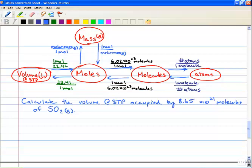Hey everyone, what's happening? Well, we're just going to do a couple of examples here of calculating the volume at STP occupied by 8.65 times 10 to the 21 molecules of SO2 gas.